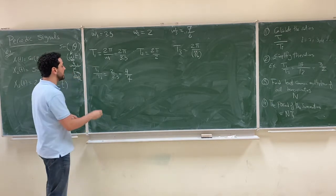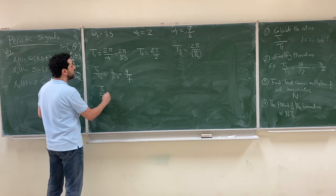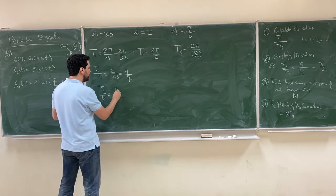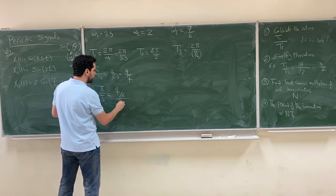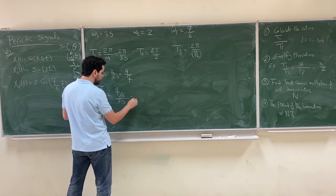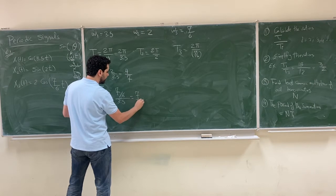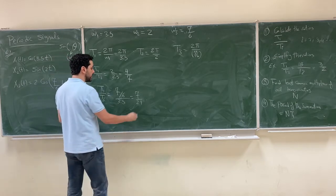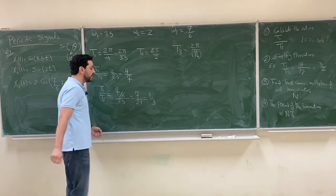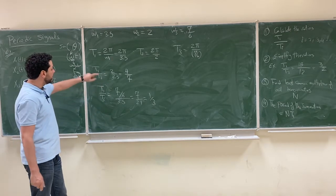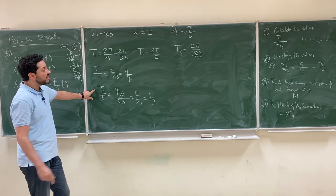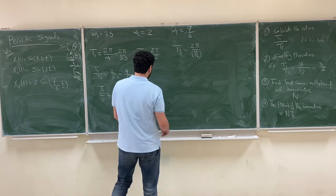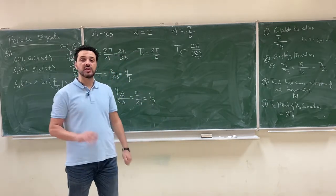Now for the ratio T₁/T₃: (2π/3.5) divided by (2π/(7/6)) gives (7/6) / 3.5, which equals 7/21, simplifying to 1/3. So again, this is a ratio of integers. We simplify both ratios according to step 2. Since both ratios are ratios of integers, the summation is going to be periodic for sure.